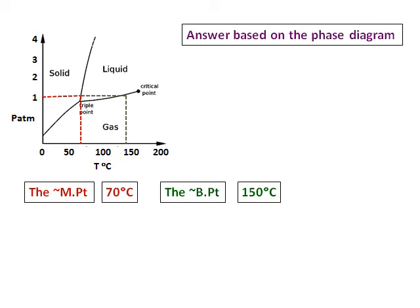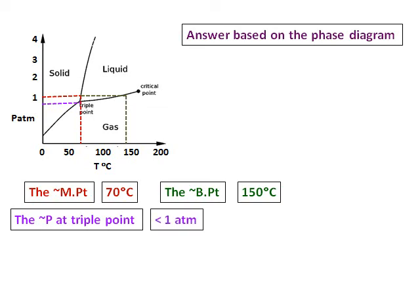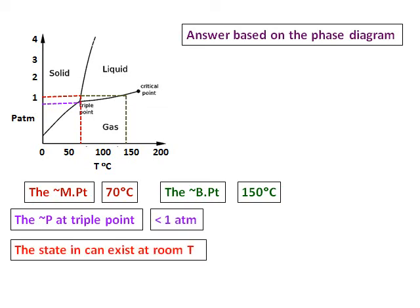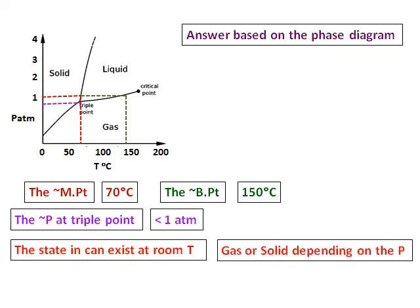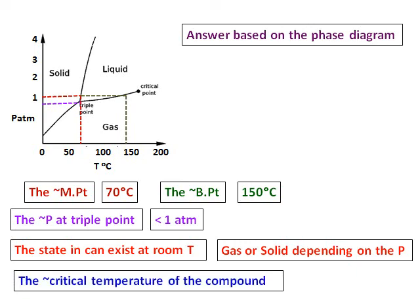The next question is: what is the approximate pressure at the triple point? Draw a line from the triple point to the pressure axis, and you can see that it is less than one atmospheric pressure. Regarding the state at room temperature — around 25 to 35 degrees Celsius — it can exist as a gas or a solid, depending on the pressure. Finally, for the critical temperature, draw a line from the critical point to the temperature axis, and it is approximately 170 degrees Celsius.